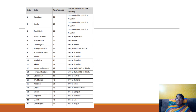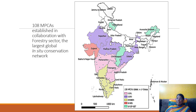Thus far, 21 such CAMPs have been conducted and about 450 medicinal plant species have been assessed, with some of them updated in the IUCN list. Once we know the threatened plants and which places they are occurring, we also have to establish in-situ conservation sites.